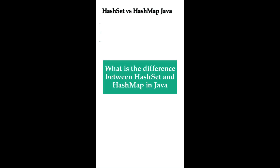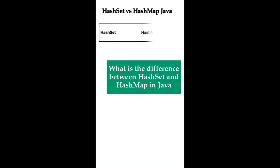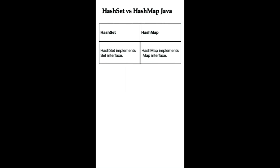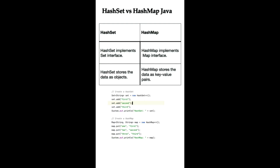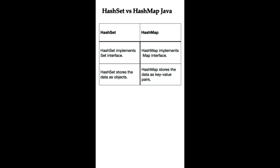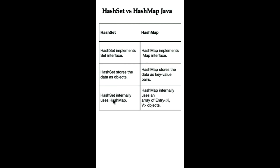What is the difference between HashSet and HashMap in Java? HashSet implements the Set interface, whereas HashMap implements the Map interface. HashSet stores its elements as individual objects, whereas HashMap stores data as key-value pairs. HashSet uses HashMap internally to store its elements, whereas HashMap internally uses an array of Entry objects.